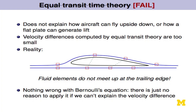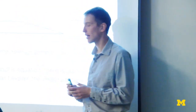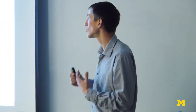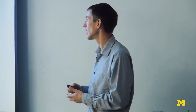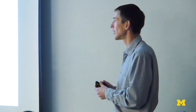This explanation fails. It can't explain how an aircraft wing can fly upside down and generate positive lift, or how a flat plate — like a sheet of paper or balsa glider — can generate lift. Even for a typical airfoil, the velocity difference you get is too small to generate the pressure differences observed in real aircraft. The fluid elements do not actually meet up at the trailing edge — experiments confirm this. There's nothing wrong with Bernoulli's equation itself, but there's no reason to apply it if the starting point is incorrect.